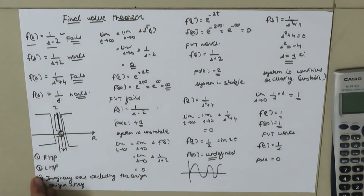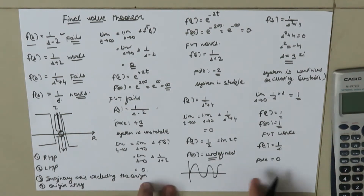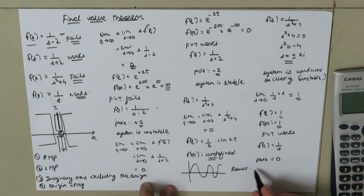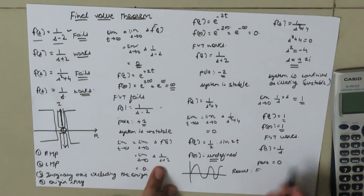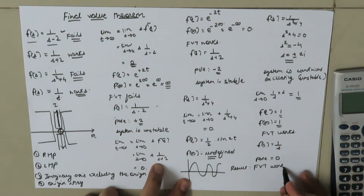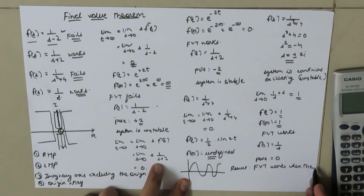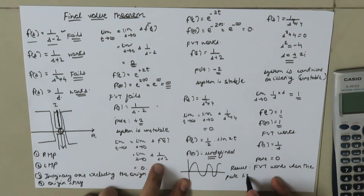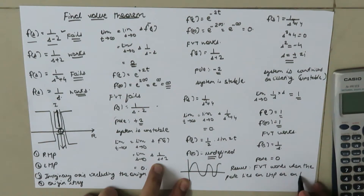We conclude that the final value theorem only works when the pole lies in the left half plane or on the origin.